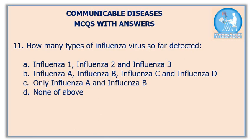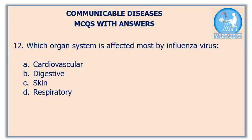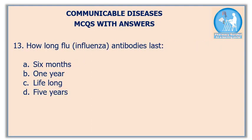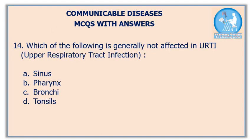Eleventh question: how many types of influenza virus have been detected so far? The correct answer is option B. Twelfth question: which organ system is most affected by influenza virus? The correct answer is option T — the respiratory system. Thirteenth question: how long do influenza antibodies last? The correct answer is option A: six months. Fourteenth question: which of the following is generally not affected in upper respiratory tract infection? The correct answer is option C: bronchitis.